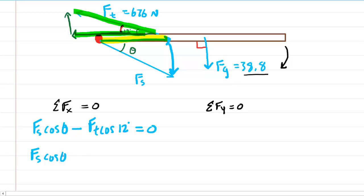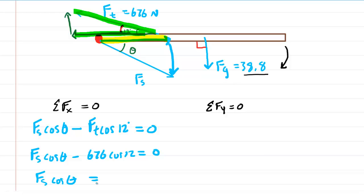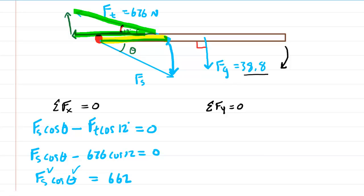Plugging in F_t = 676 newtons: F_s × cos(theta) − 676 × cos(12°) = 0. Computing 676 × cos(12°) ≈ 662. So F_s × cos(theta) = 662. We can't solve for F_s yet because we have two unknowns — theta and F_s itself — so we move on to the y-direction, where there are several forces to consider.